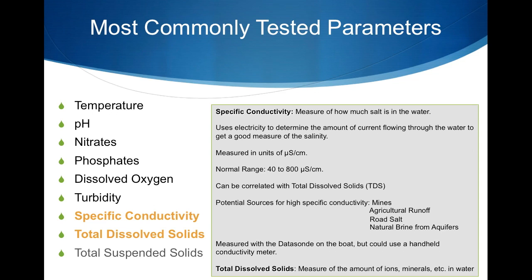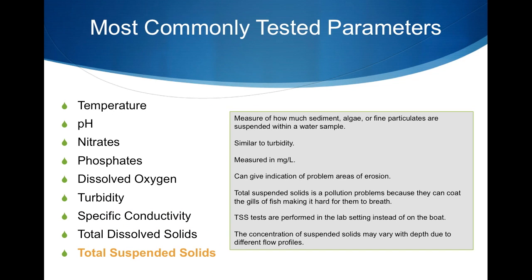Total dissolved solids is a measure of the number of ions, minerals, and other substances dissolved in water. Specific conductance and total dissolved solids are correlated, as specific conductance is part of the total dissolved solids measurement. Total suspended solids is a measure of how much sediment, algae, or fine particulates are suspended within a water sample, and is very similar to turbidity but measured as milligrams per liter instead of centimeters or meters. This can give an indication of problem areas of erosion.